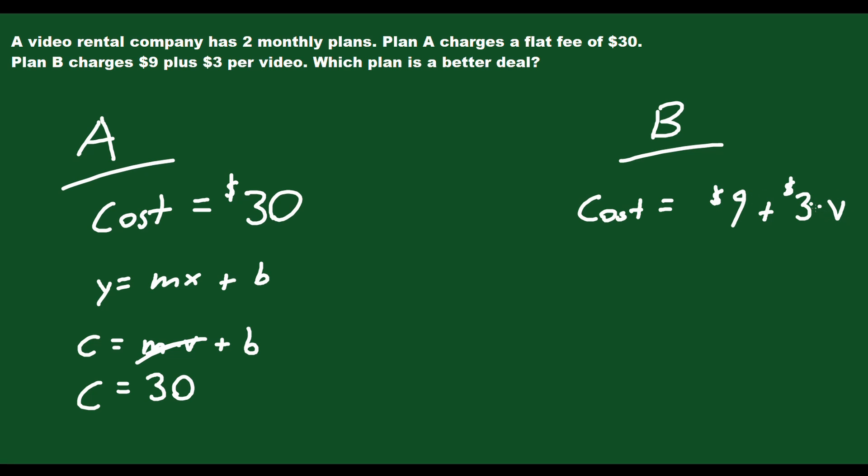If you rent two videos, it's 3 times 2, which is 6 plus 9, which is $15. And so the more videos you rent, the more costly this plan becomes.